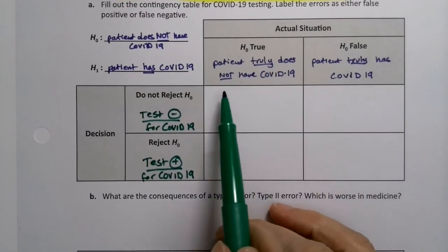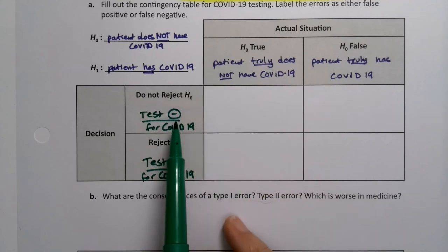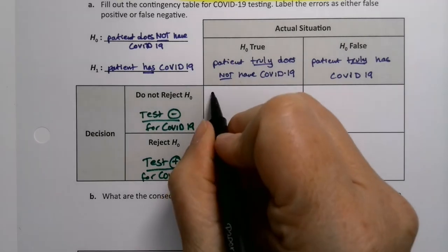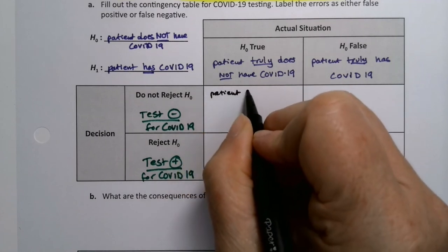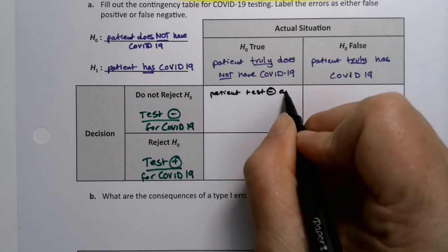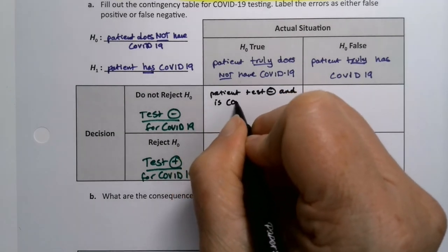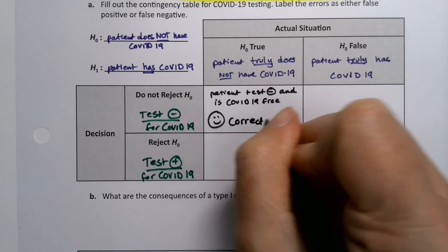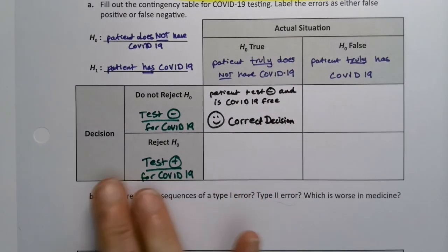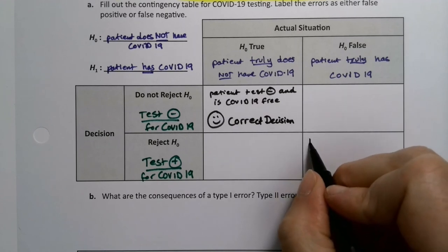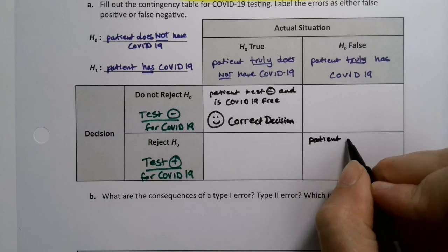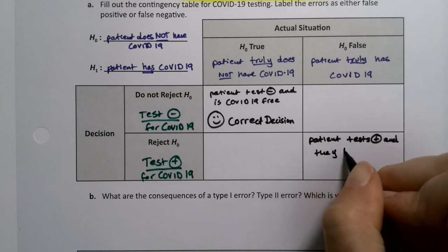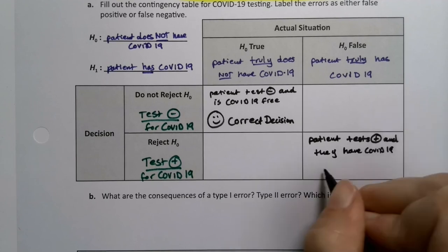In the top-left corner, the person truly does not have COVID-19 and they test negative — this is a correct decision. The patient tests negative and is COVID-19 free. In the bottom-right corner, the patient tests positive and they truly have COVID-19 — also a correct decision.